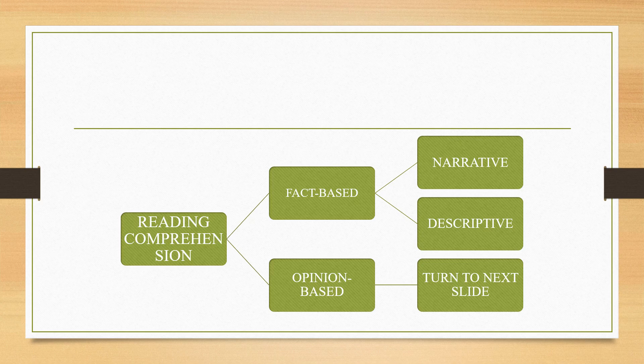Reading comprehensions are divided into two parts: a fact-based approach and an opinion-based approach. A fact-based approach means the comprehension is based on pre-existing facts with no author opinion. An opinion-based approach means it is an opinionated passage where the author adds his opinions to the existing situation. Fact-based approach is further divided into two parts: narrative and descriptive. A narrative passage is simply the narration of a story — whenever you see a reading comprehension that tells a story, it becomes a narrative passage.